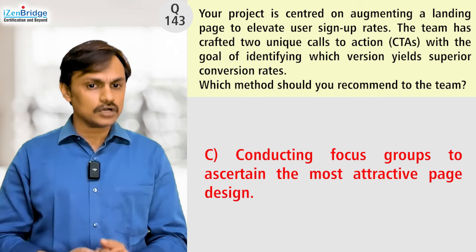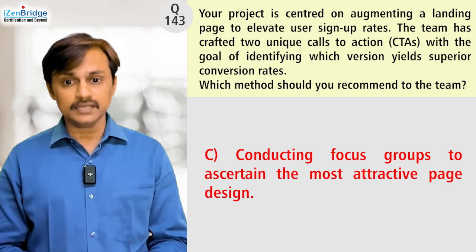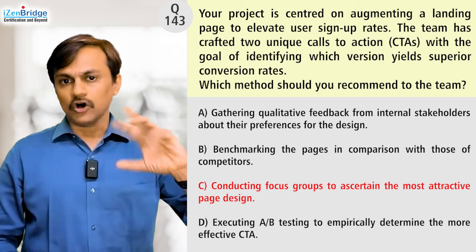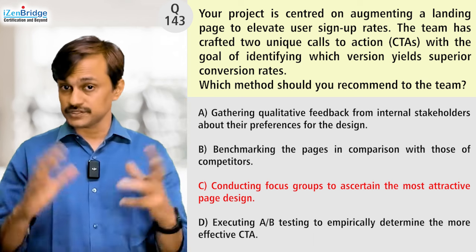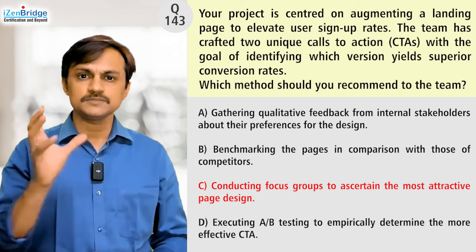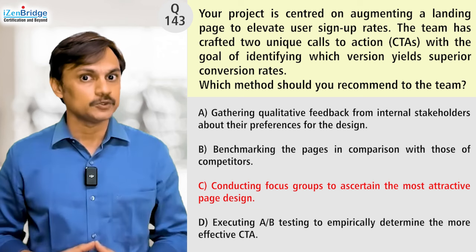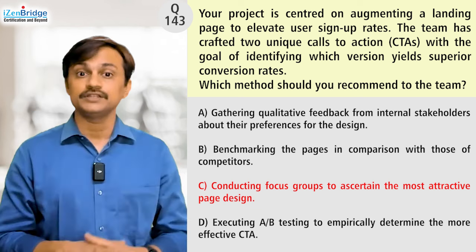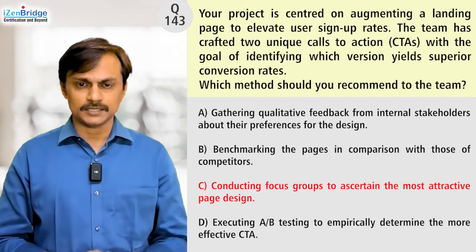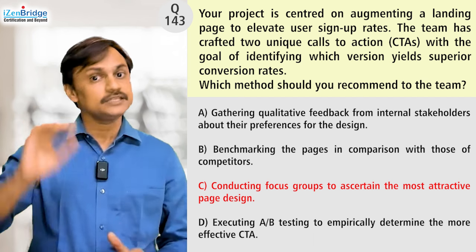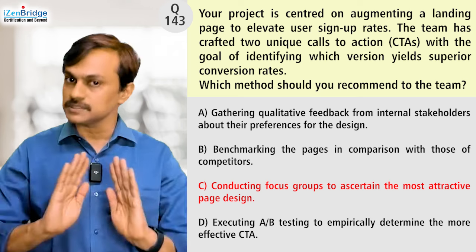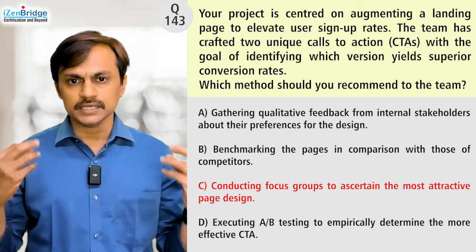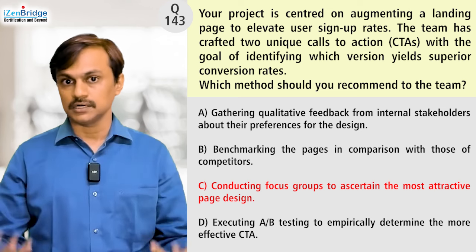Option C: Conducting a focus group to ascertain the most effective page design. It is like a subset of Option A. Option A says gather information from stakeholders; now you find specialized stakeholders to evaluate these two pages and tell you which one is better. Options A, B, and C are all candidates and possible options — we are just looking for the better one that gives real insight from user behavior.